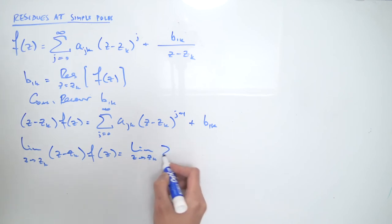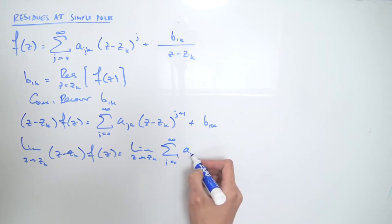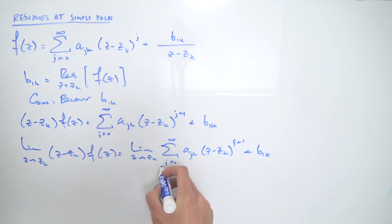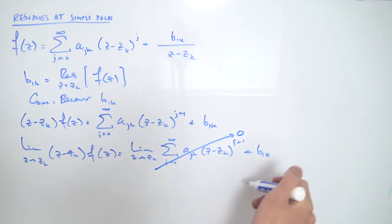So this is Z approaches Zk, the sum from J equals zero to infinity of A sub Jk times Z minus Zk to the J plus one, plus B sub 1k. In this limit, this whole entire sum goes to zero. And that's going to leave us with this B sub 1k. But remember, this is exactly the residue.